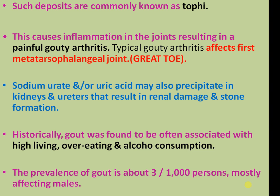Typical gouty arthritis affects the first metatarsophalangeal joint. Sodium urate or Uric Acid may also be precipitated in the kidneys and ureter, resulting in renal damage and stone formation. Historically, gout was found to be often associated with high living, overeating, and alcohol consumption.